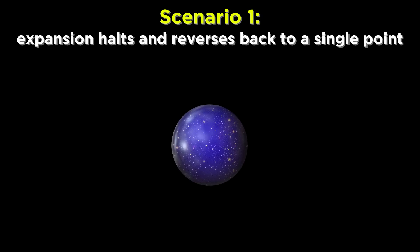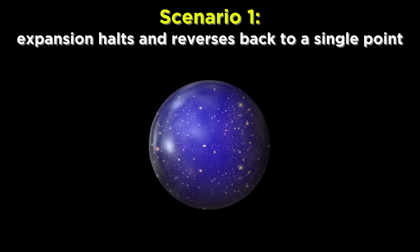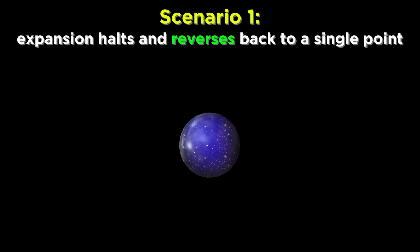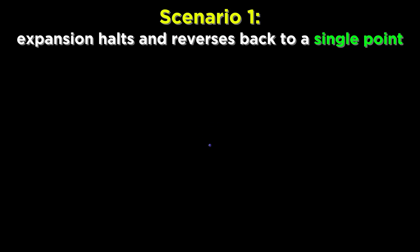First let's outline a few candidates for the death of the universe. We know that the universe began as a single point and has been expanding ever since. It could be possible that the expansion will slow down, halt, and then reverse, allowing the universe to contract all the way back to a single point, which we call the big crunch.